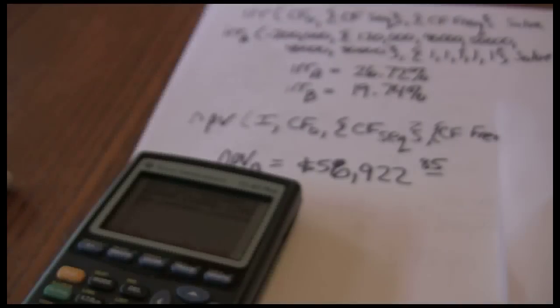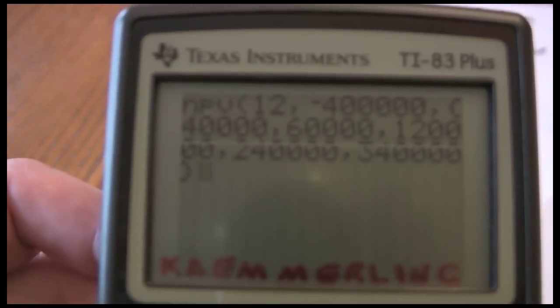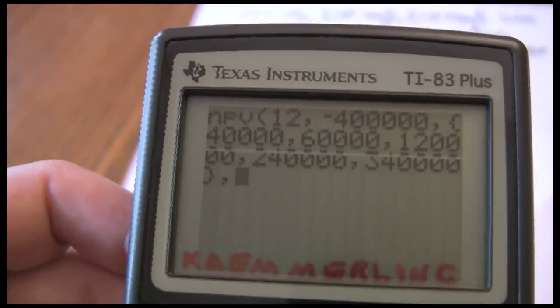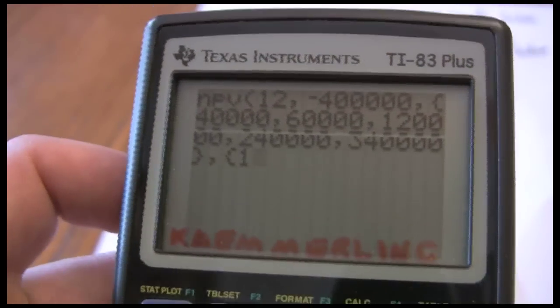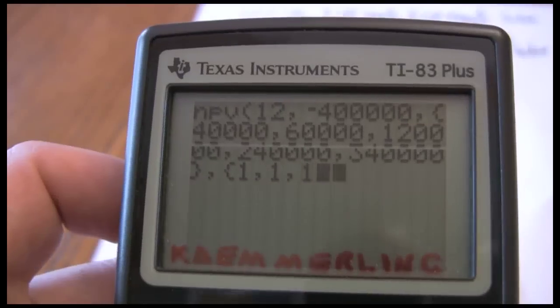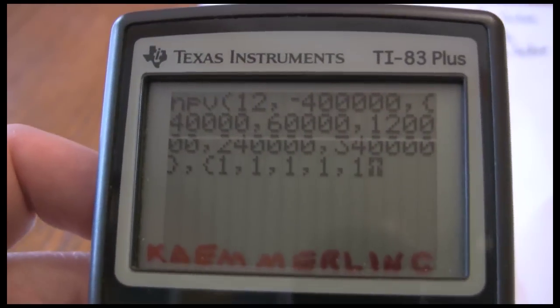So now when I put in my cash flow frequencies, just have a sequence of five ones for my frequencies. Close that out.